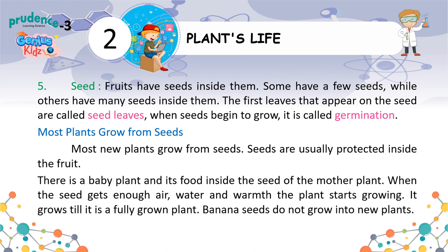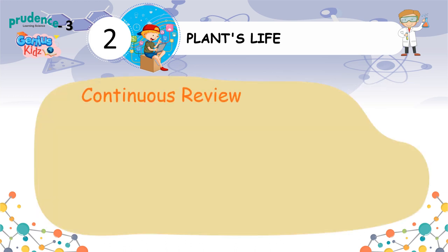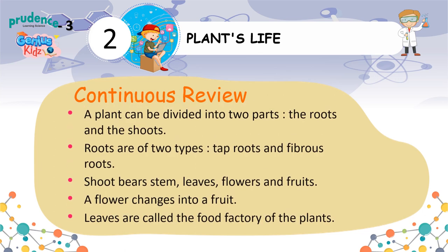Continuous review. A plant can be divided into two parts: the roots and the shoots. Roots are of two types: tap roots and fibrous roots. The shoot bears stem, leaves, flowers and fruits. A flower changes into a fruit. Leaves are called the food factory of the plant.